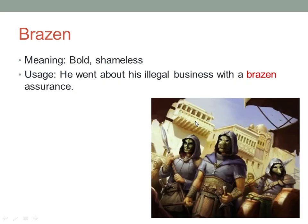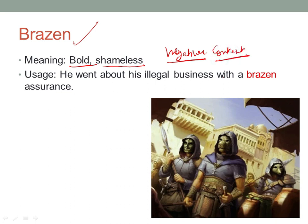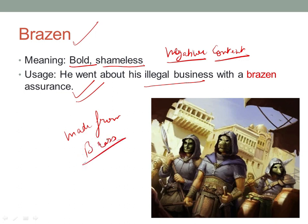The next word is 'brazen'. Brazen means bold and shameless, and is especially used in a negative context. For example: 'He went about his illegal business with a brazen assurance' — he was bold in conducting illegal business. The literal meaning of brazen is also 'made from brass'; something made from brass is also called brazen.